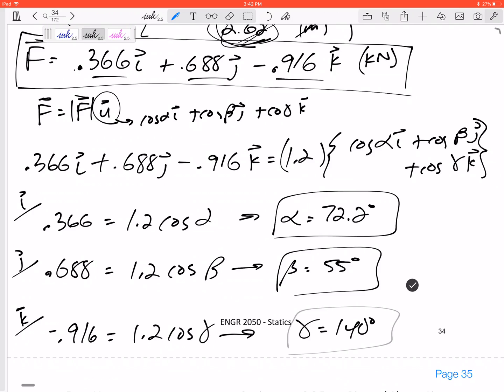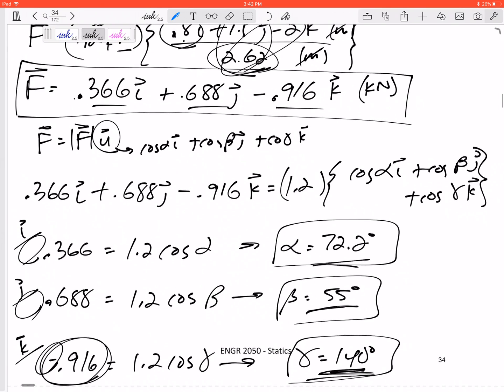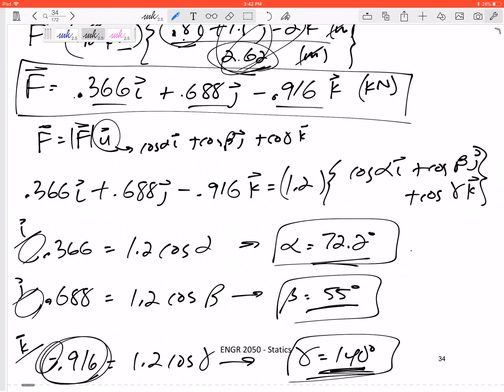Now a few things you can double check. Actually one thing you can check: cosine of that squared plus cosine of that squared plus cosine of that squared should add up to one. But also, positive components should lead to acute angles and a negative component should be greater than 90 degrees, so that checks out. Also, the largest magnitudes should be furthest from 90 degrees, so either closest to 180 or closest to zero. This is getting closer to 180 compared to the other two. So just a few things you can double check here for these coordinate direction angles to make sure they make sense.